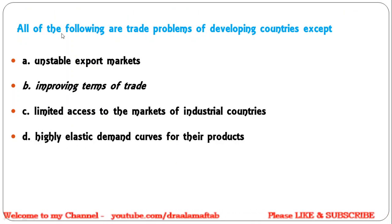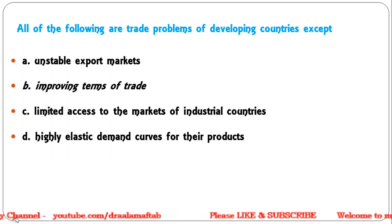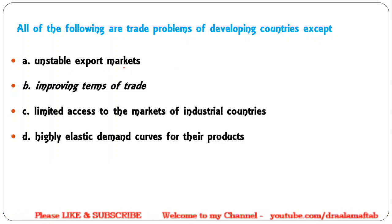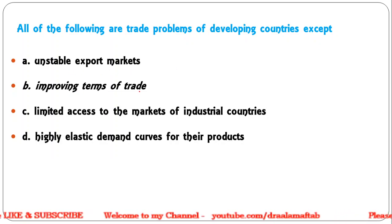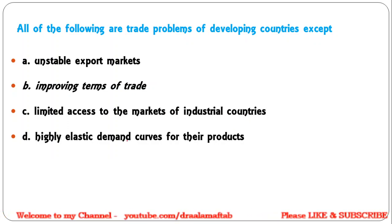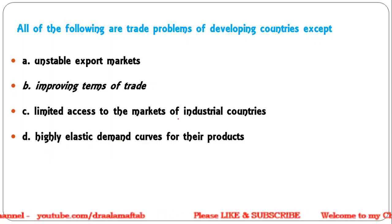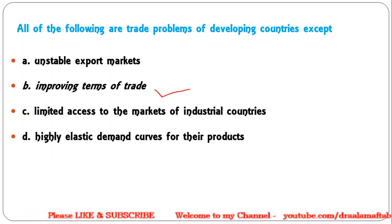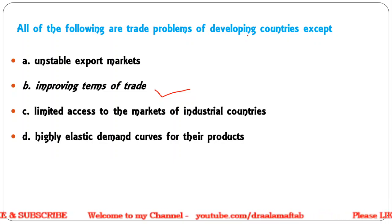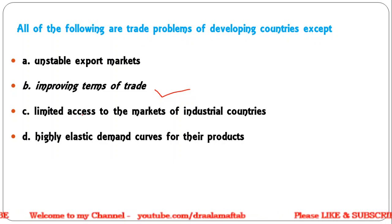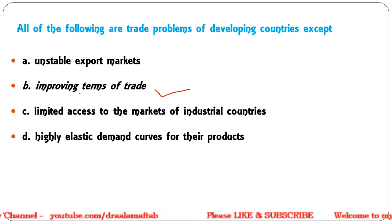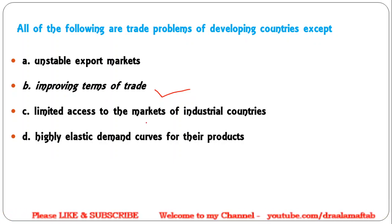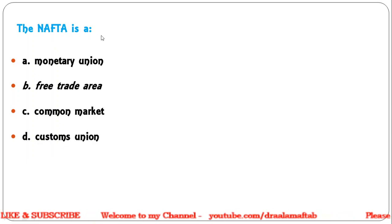Next: All of the following are trade problems of developing countries except — unstable export markets; improving terms of trade; limited access to the markets of industrial countries; highly elastic demand curves for their products. Correct answer is B — improving terms of trade. All of A, C, and D are trade problems of developing countries. Developing countries face deteriorating terms of trade, not improving. Next: NAFTA is — a monetary union; free trade area; common market; customs union. NAFTA, the North American Free Trade Agreement, is a free trade area.